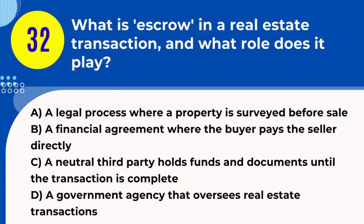Question 32. What is escrow in a real estate transaction, and what role does it play? A. A legal process where a property is surveyed before sale. B. A financial agreement where the buyer pays the seller directly. C. A neutral third party holds funds and documents until the transaction is complete. D. A government agency that oversees real estate transactions. Answer: C. Explanation. In a real estate transaction, escrow refers to a neutral third party holding all funds, documents, and other pertinent items related to the transaction until all conditions of the sale are met. It ensures a smooth and secure transfer of property and funds between the buyer and seller.